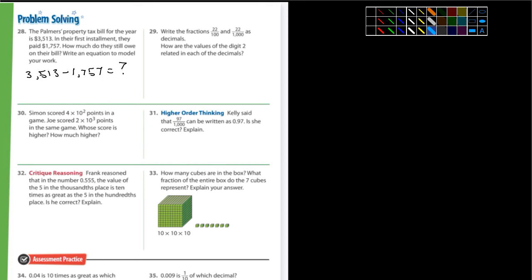Okay, number 29. It says write the fractions 22 over 100 and 22 over 1,000 as decimals. Well, let's take a look at that. Let's do 22 over 100. And I need to write that as a decimal. So, it's over 100. So, it's going to be two places. And they give us the numbers. It's going to be 0.22. And then they said let's do 22 over 1,000. So, now we're talking three places here. Add a zero there. It's going to be three places to the right of the decimal.